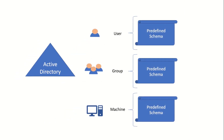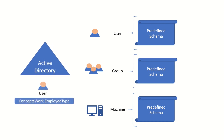There is a predefined schema that exists in Active Directory for all object types. Depending upon our requirement, we extend these schemas so that new attributes are populated. I will showcase this with a custom attribute I created named Concepts Work Employee Type, which I have mapped to the user class in Active Directory Schema Editor.